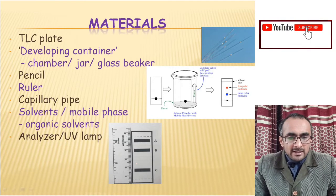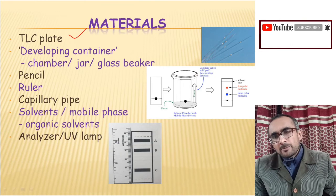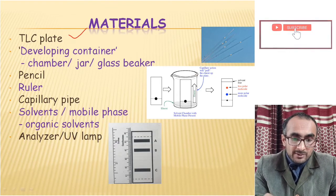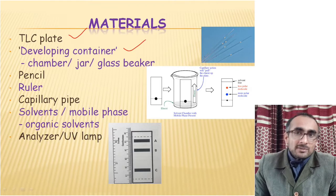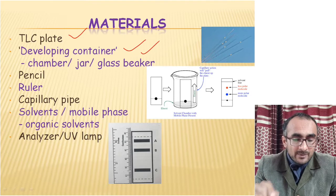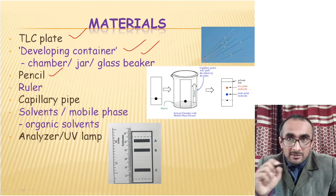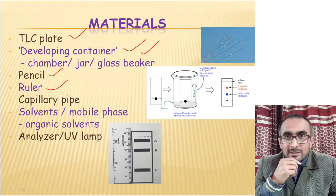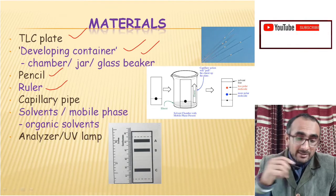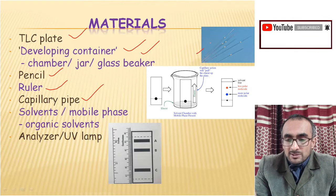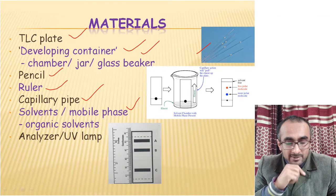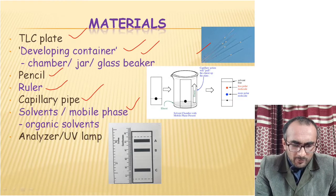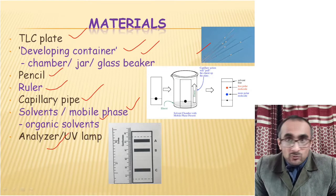Materials required for TLC include: a TLC plate (alumina or silica gel plate), a developing container such as a jar, glass beaker, or chamber where mobile phase is placed, a pencil to mark the ends of the TLC plate, a ruler to measure RF values and travel distances, a capillary pipe to load the sample, a mobile phase solvent, and a UV lamp or analyzer depending on the type of stationary phase being used.